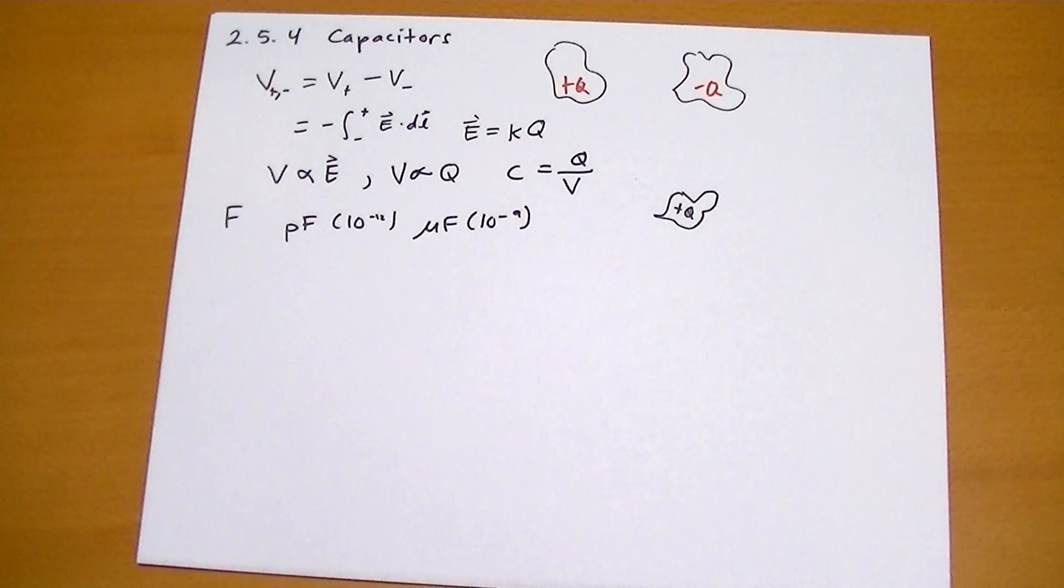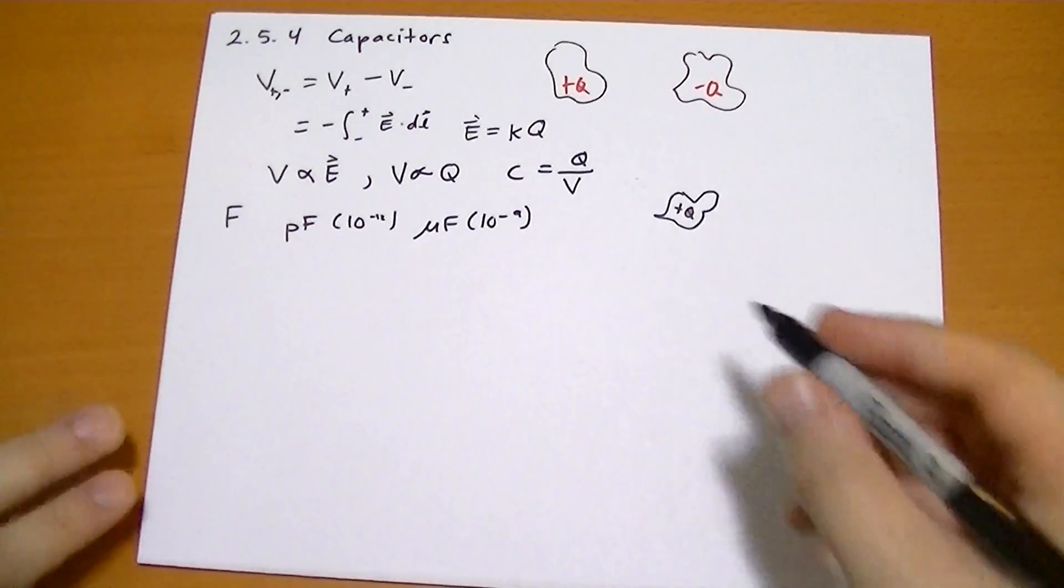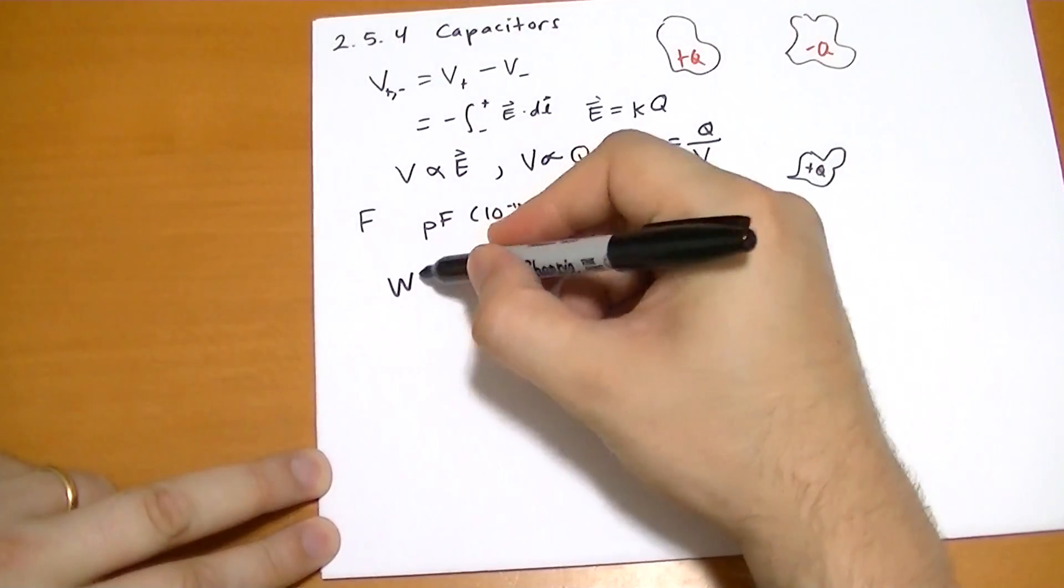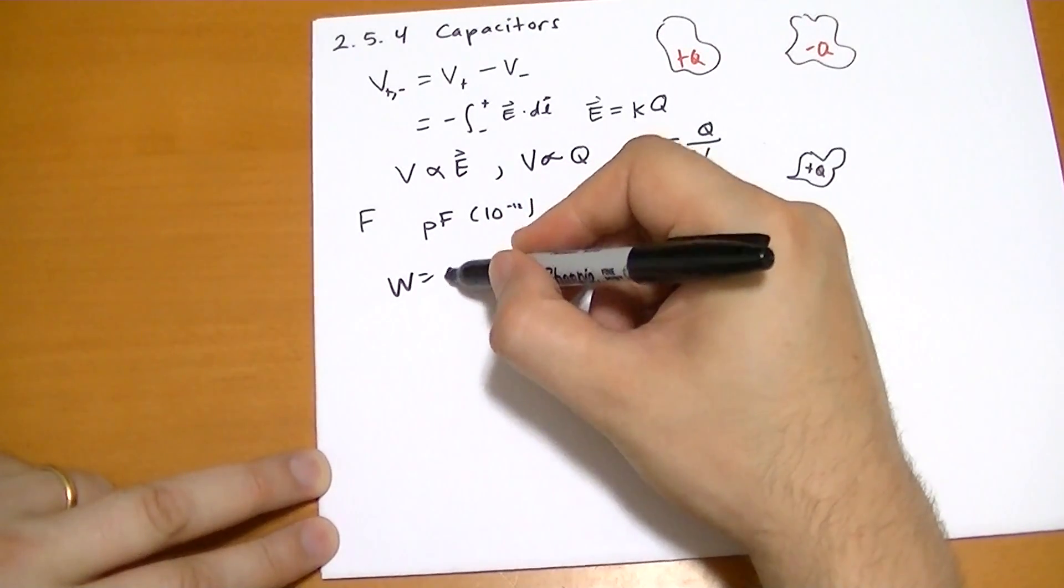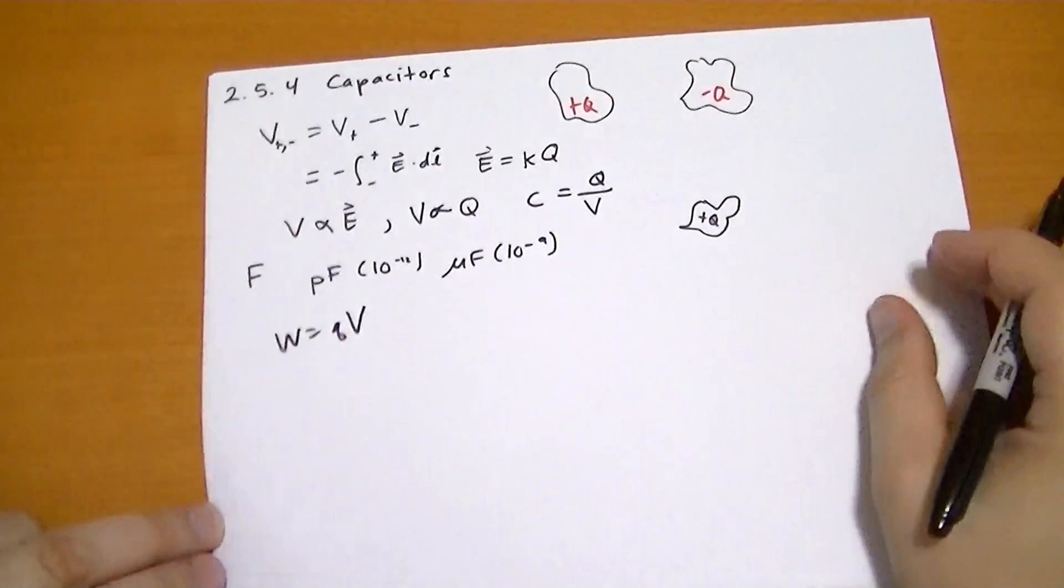And so we're going to use some basic formulas. This is straight up algebra. So work equals the charge times the potential, right?